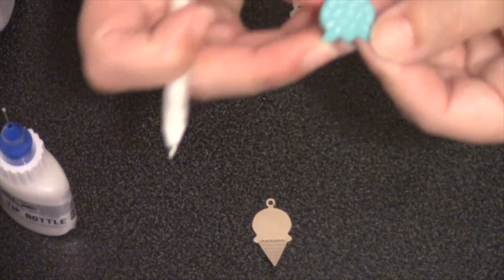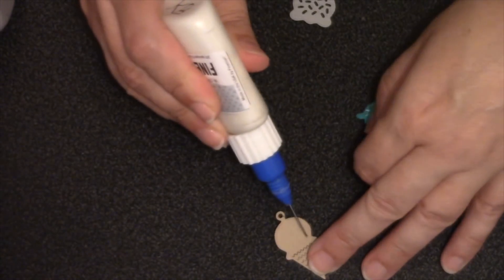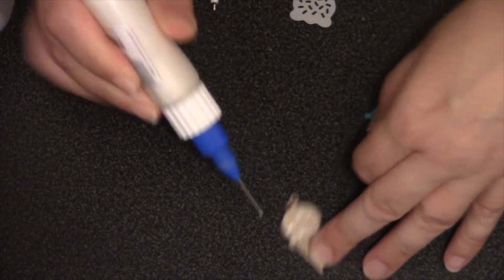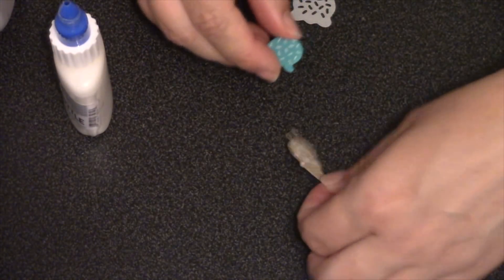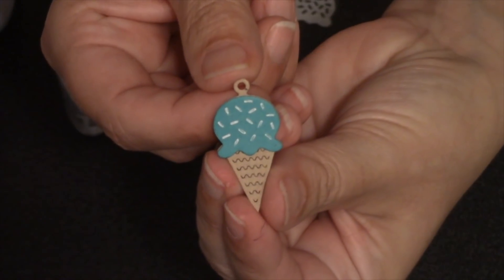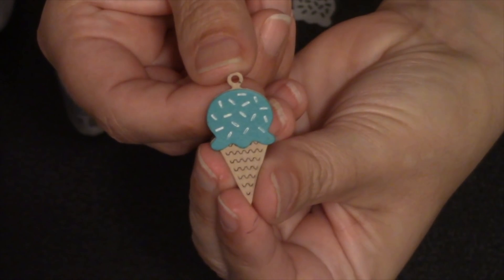And then that just glues right over the top of the full charm. So super easy assembly on the ice cream cone, and I'm particularly happy with the way that the pattern turned out on the cone itself. I just think it's a cool detail, makes it look very textural.